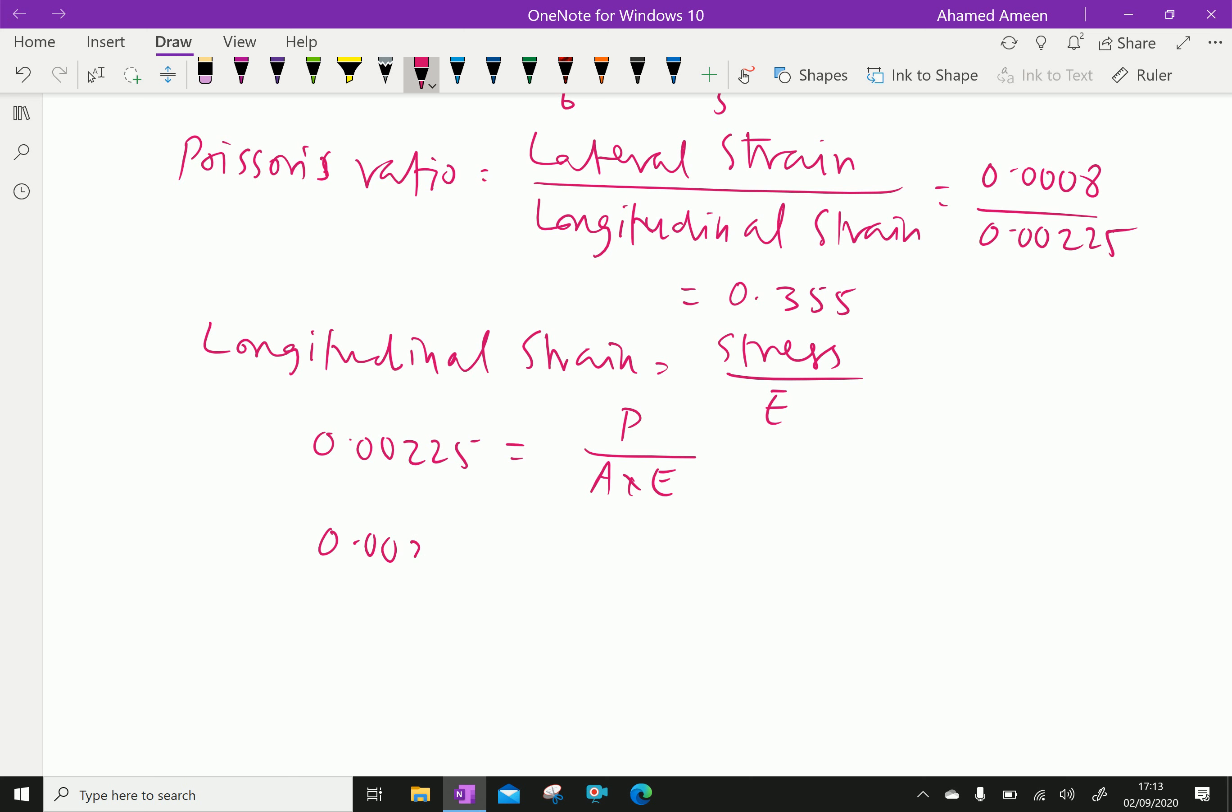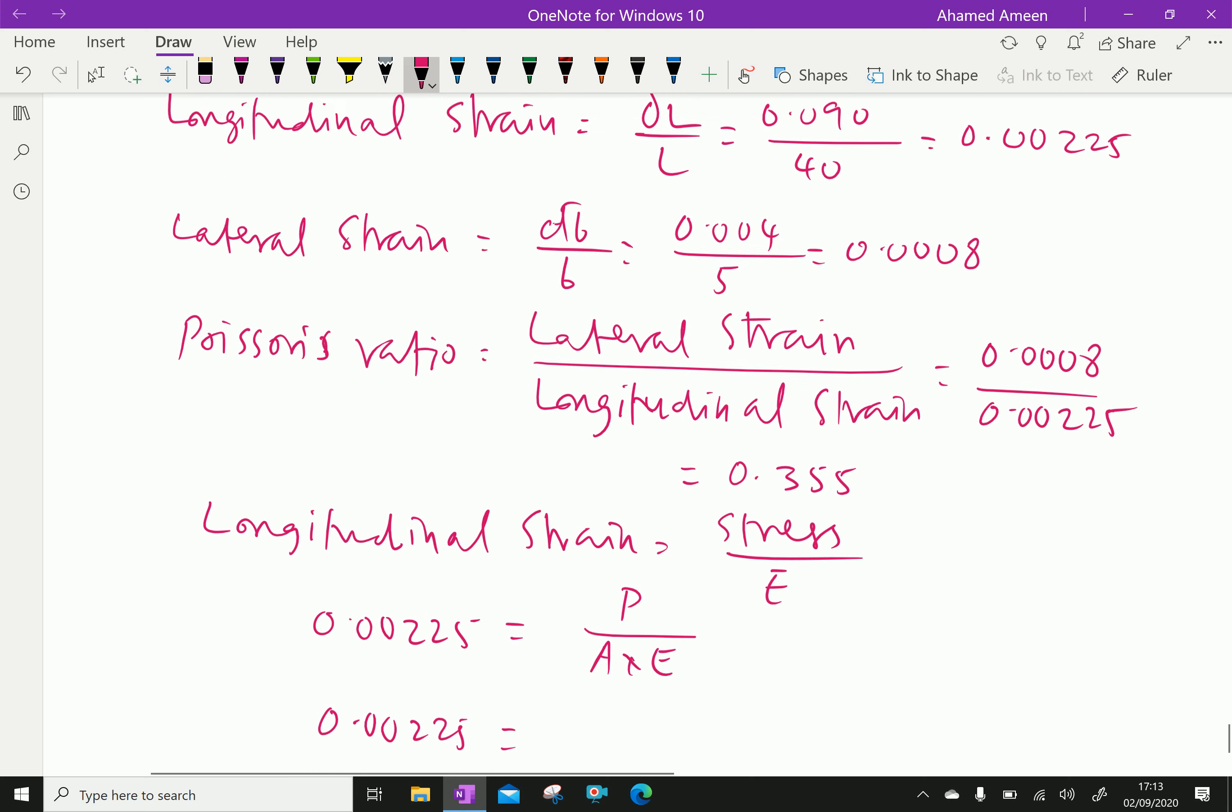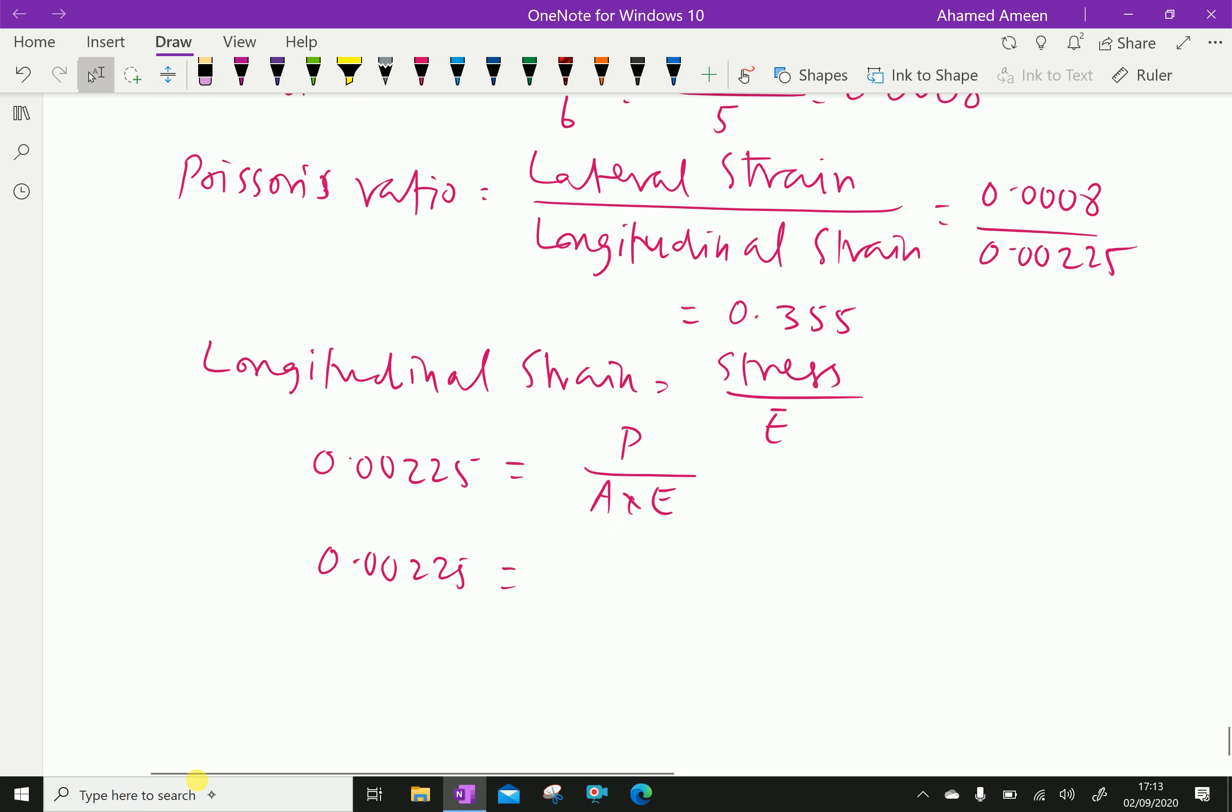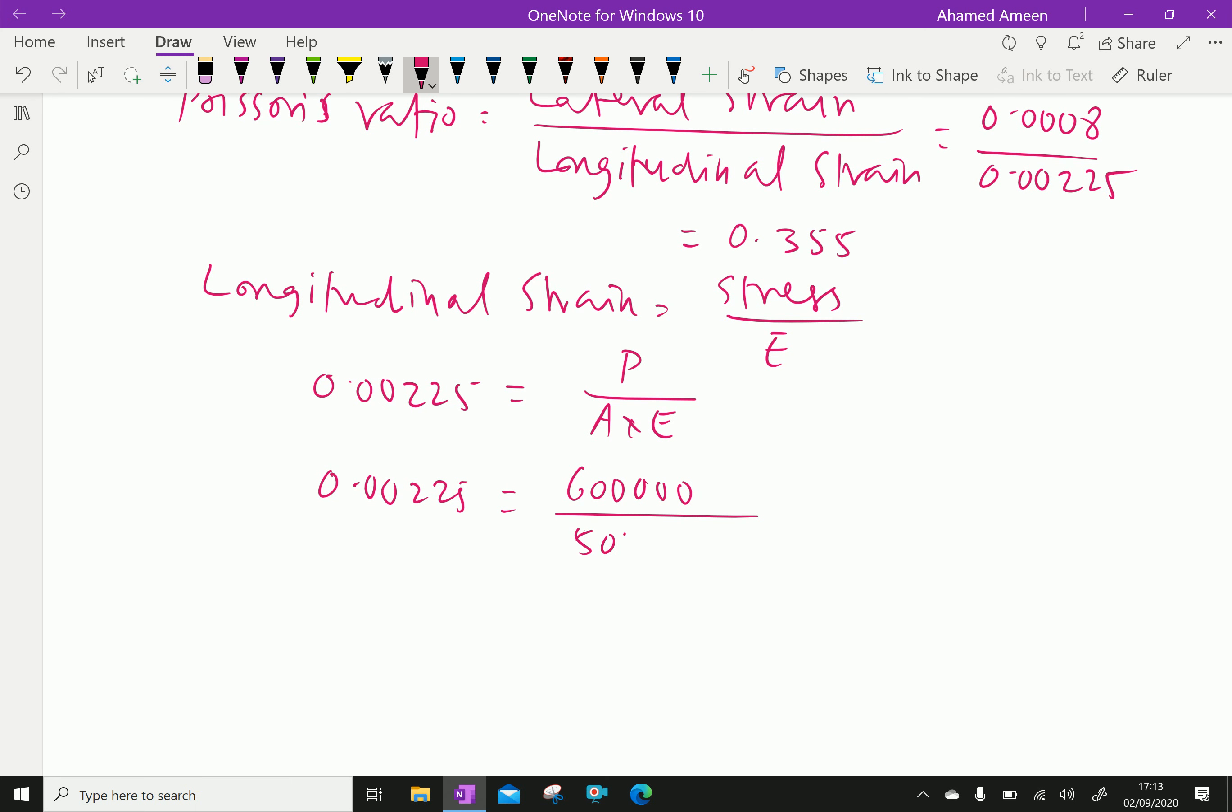So 0.00225 equals compressive load 600 into 1000, that is 600000 over area. Area is 50 into 50, converting 5 cm to 50 mm, so 50 mm into 50 mm into E.